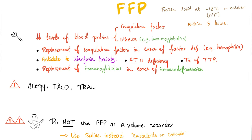Fresh frozen plasma: we take it from the patient's vein, and within eight hours it should be frozen — that's why we call it fresh frozen. Clinical uses include replacement of coagulation factors in case of factor deficiency, for example hemophilia. Hemophilia A has deficiency of factor 8 — you can give fresh frozen plasma, or better, just give factor 8. Hemophilia B is factor 9, hemophilia C is factor 11; for all of them, fresh frozen plasma can help. It's also an antidote to warfarin toxicity — if you gave too much warfarin and want to reverse its effect, give fresh frozen plasma. It's used for antithrombin 3 deficiency, because fresh frozen plasma contains antithrombin 3. Treatment of TTP — give FFP for TTP. And it provides replacement of immunoglobulins in cases of immunodeficiency.